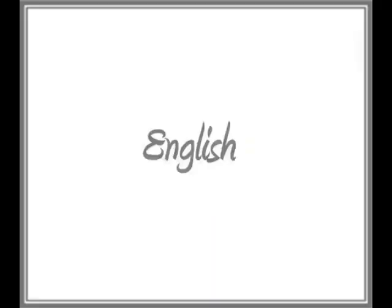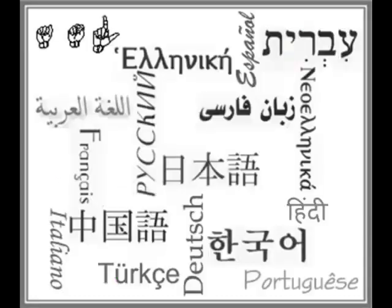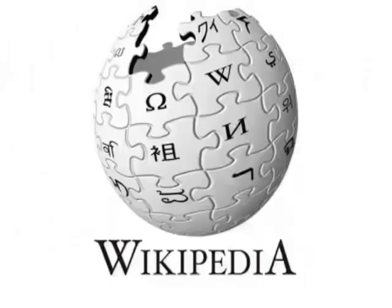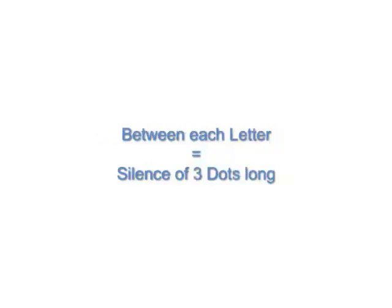Bad points: Morse code was only defined for the English letters and numbers, plus a few punctuation marks. It had no way of representing some of the extra symbols used in European languages or other languages such as Greek, Hindi, or Chinese. Wikipedia comments that the long tones, called dashes, had to be three times as long as the short tones, called dots. I also found that Morse code required three lengths of silences: a short silence between dots and dashes that was one dot long, a medium length silence between letters that was three dots long, and a longer silence of seven dots between words.